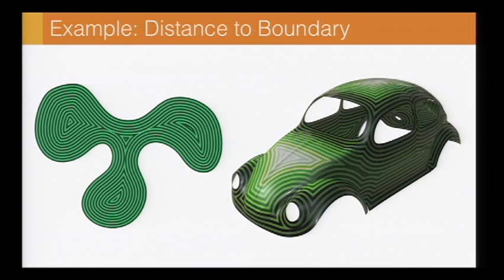Here's just a few more examples. Again, the distance to the boundary. And here you can see that we get a very nice, sharp cut locus, meaning points where the shortest path to the boundary is not unique.